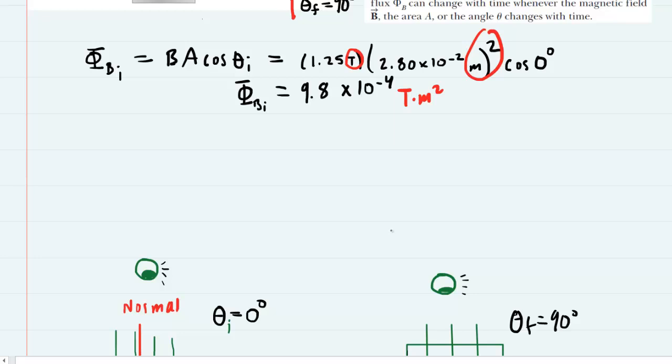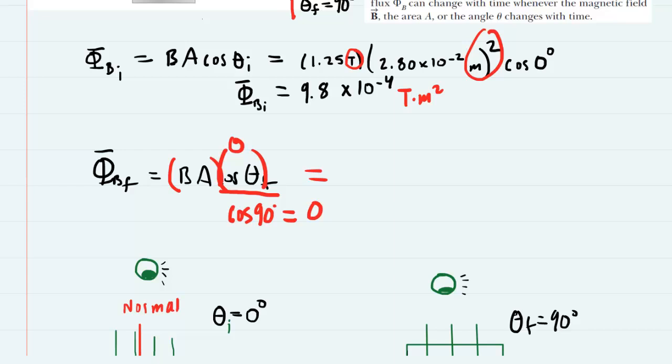Now we can calculate the final magnetic flux. We'll put a little subscript F here. It's BA cosine of the final angle. We can take a shortcut here, because the angle is 90 degrees, and it's worth remembering that the cosine of 90 degrees is actually equal to zero. So you're going to have BA multiplied by zero, which of course gives us zero. This is the final magnetic flux, zero tesla meters squared.